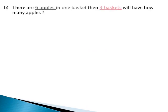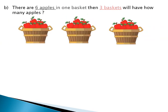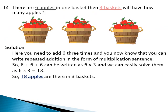Let's take another example. There are 6 apples in one basket. How many apples will 3 baskets have? Number of baskets: 3. Number of apples in each basket: 6. We have to find how many apples there are in all — we need to add 6 three times. We can write repeated addition as a multiplication sentence: 6 plus 6 plus 6 equals 6 times 3, and 6 times 3 equals 18. So there are 18 apples in 3 baskets. Whenever there is a repeated addition problem, we can solve it using multiplication.